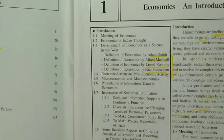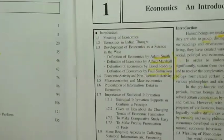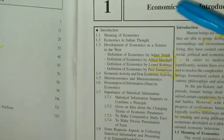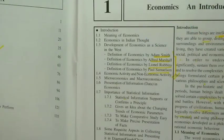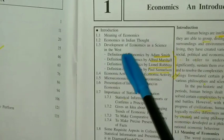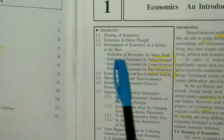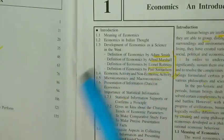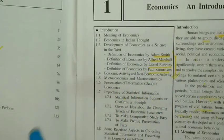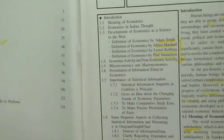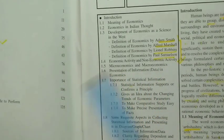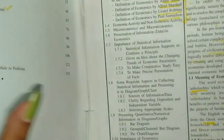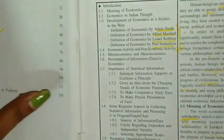As you can see, now you are having books. The first is the introduction part, meaning of economics, economics in Indian thought, then development of economics as a science. In the West, we are having four experts: definition of economics by Adam Smith, Alfred Marshall, Lionel Robbins, and Paul Samuelson. Then economic activity and non-economic activity, microeconomics and macroeconomics. Though we are having too many topics here, let's start with the introduction part.